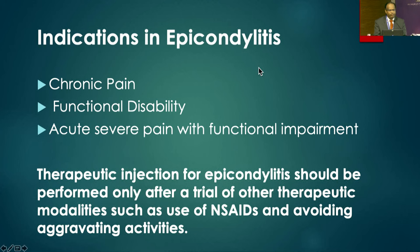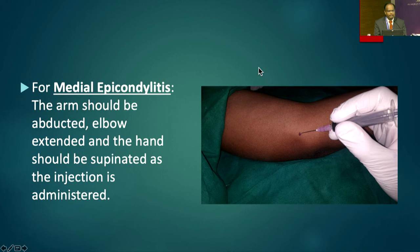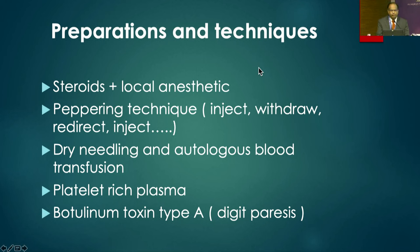Epicondylitis occurs from repetitive activities — golf causes medial epicondylitis, tennis causes lateral epicondylitis. Patients have tenderness, pain, weakened hand grip, and weakness exacerbated by resisted wrist extension and supination for lateral (Mill's sign) or resisted wrist flexion and pronation for medial epicondylitis. Indications for injection are chronic pain with functional disability and acute severe pain with functional impairment, after trial of NSAIDs and avoiding aggravating activities. For lateral epicondylitis, the needle is inserted at 90 degrees to the level of bone and pulled back 1–2 mm; the point of maximum tenderness should be addressed.